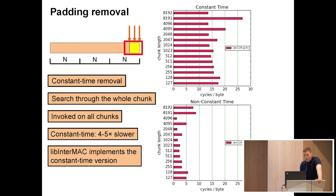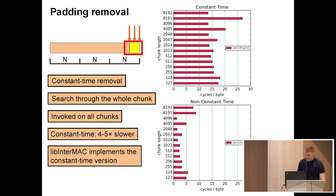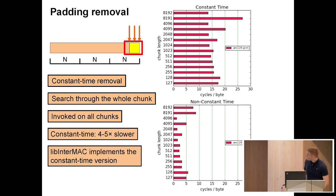So we implemented a constant-time padding removal function. It searches through the whole chunk, visiting each byte exactly once. We also invoke this algorithm on all chunks of all messages, not to leak which chunk padding is being removed from. Doing a linear search over all chunks must add some overhead — our study showed that using constant-time padding removal slows decryption down by a factor of 4 to 5, which is significant. But we wanted maximal security, so we still implemented the constant-time version.